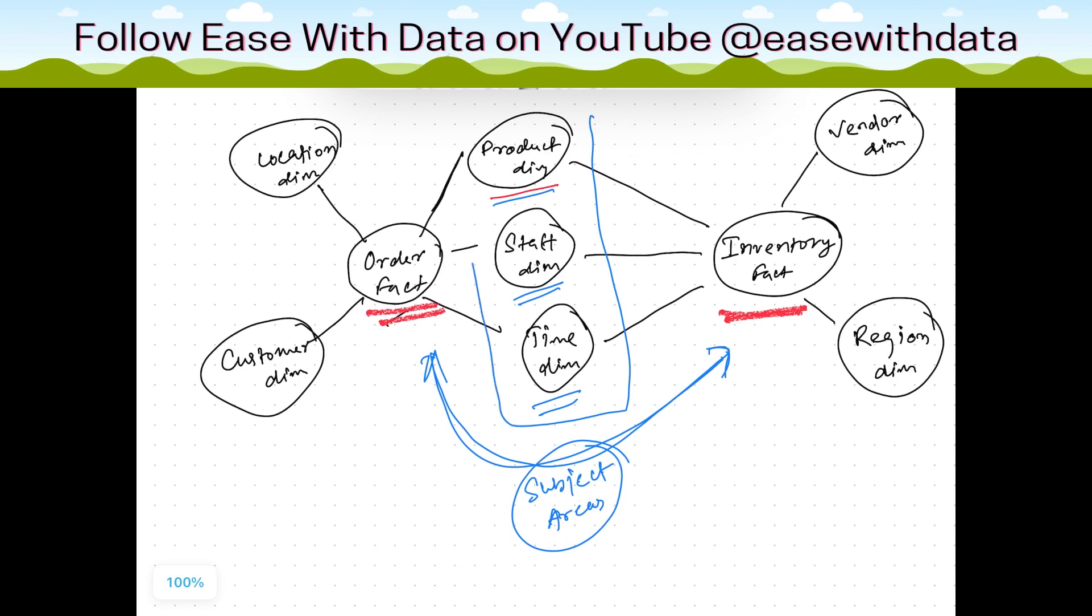Now this particular section of dimensions - product dimension, staff dimension, and time dimension - this type of dimensions are called confirmed dimensions.